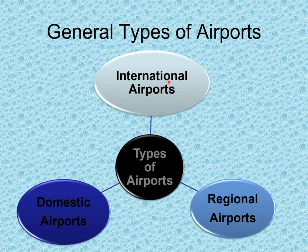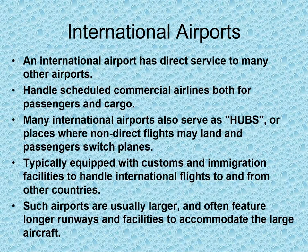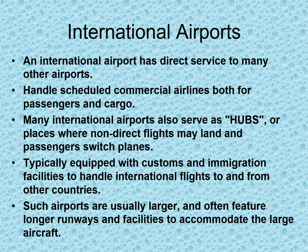General types of airports include domestic, regional, and international airports. International airports have direct service to many other airports, handle scheduled commercial airlines for both passengers and cargo, may serve as hubs, and are equipped with customs and immigration facilities. They are usually larger, often featuring longer runways and facilities to accommodate large aircraft.